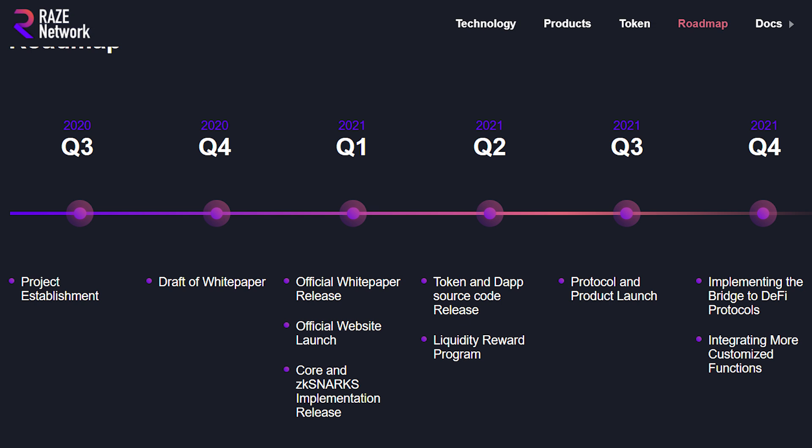The team also has an impressive roadmap starting Q3 of last year, 2020, all through Q4 of this year, 2021, with specific milestones to be achieved by each period. With a lot of ground having been covered already, we should be able to see the token and the dApp source code release, as well as a liquidity reward program from as early as next month, and of course we will keep you posted on the progress and updates.